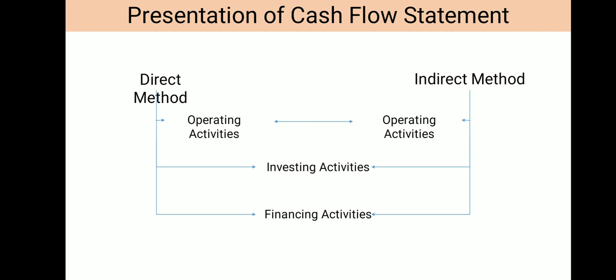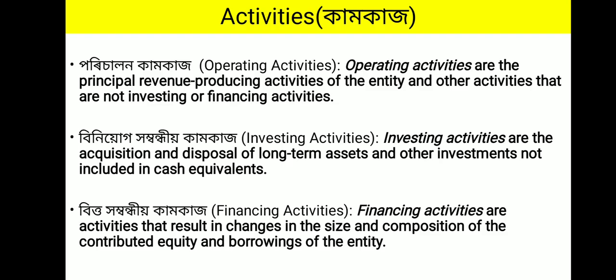There are three activities in the Cash Flow Statement: Operating Activities, Investing Activities, and Financing Activities. Operating Activities are the principal revenue-producing activities of the entity and other activities that are not Investing or Financing Activities, with two key points: they are principal revenue-producing activities, and they exclude investing and financing activities.